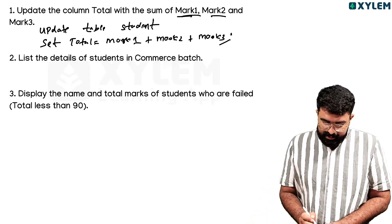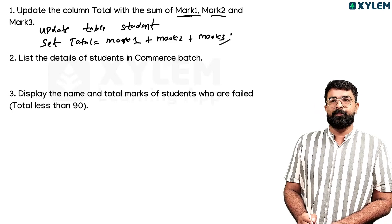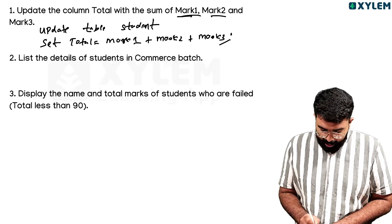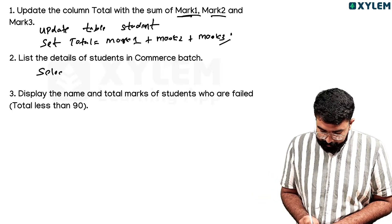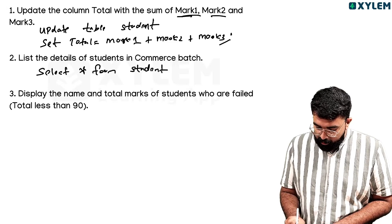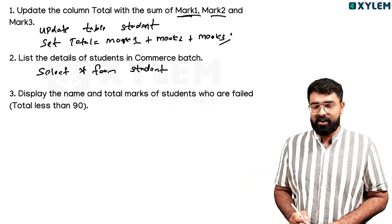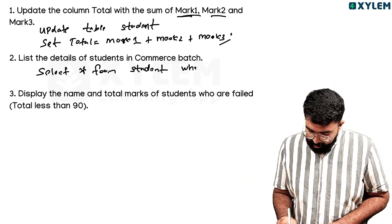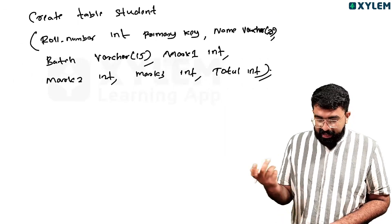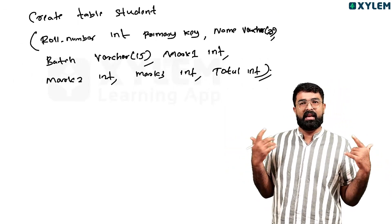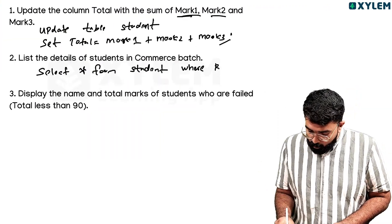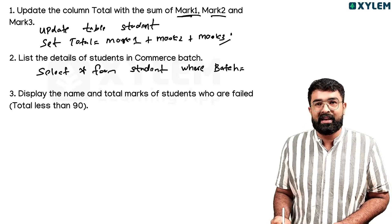Next one: list the details of students in Commerce batch - all the details. SELECT * FROM student WHERE batch = 'Commerce'.